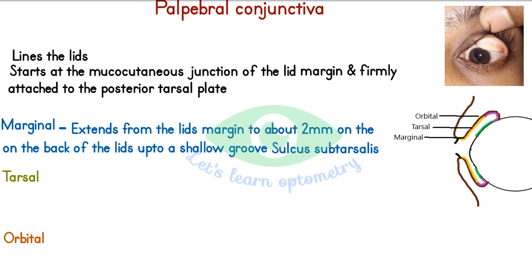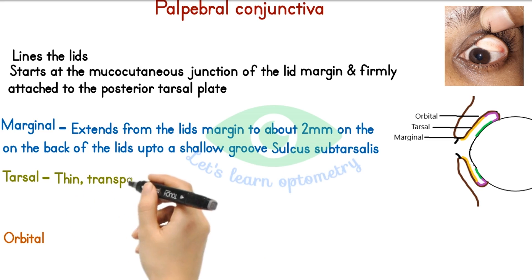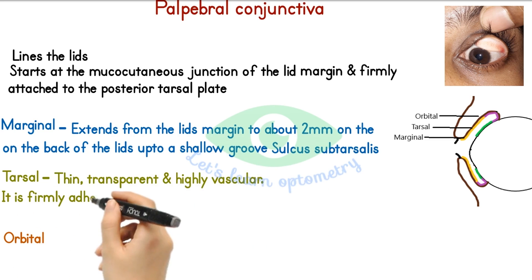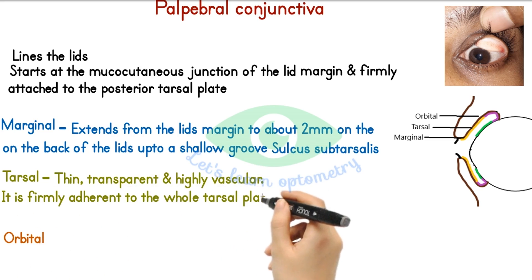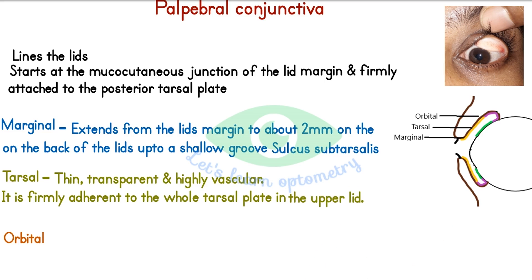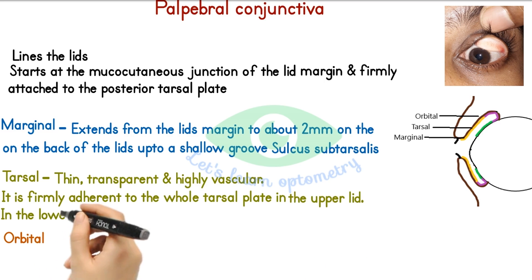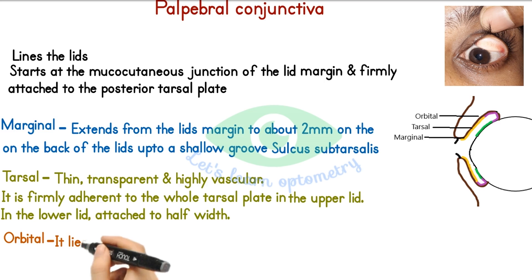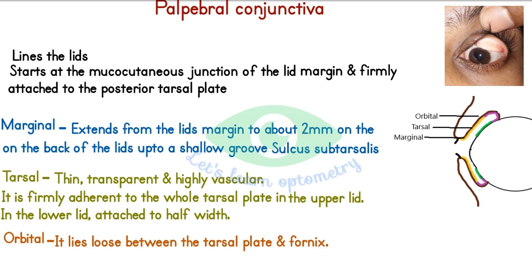The tarsal conjunctiva is thin, transparent, and highly vascular. It is firmly adherent to the whole tarsal plate in the upper lid; in the lower lid it is adherent only to the half width of the tarsus. The orbital part lies loose between the tarsal plate and the fornix.